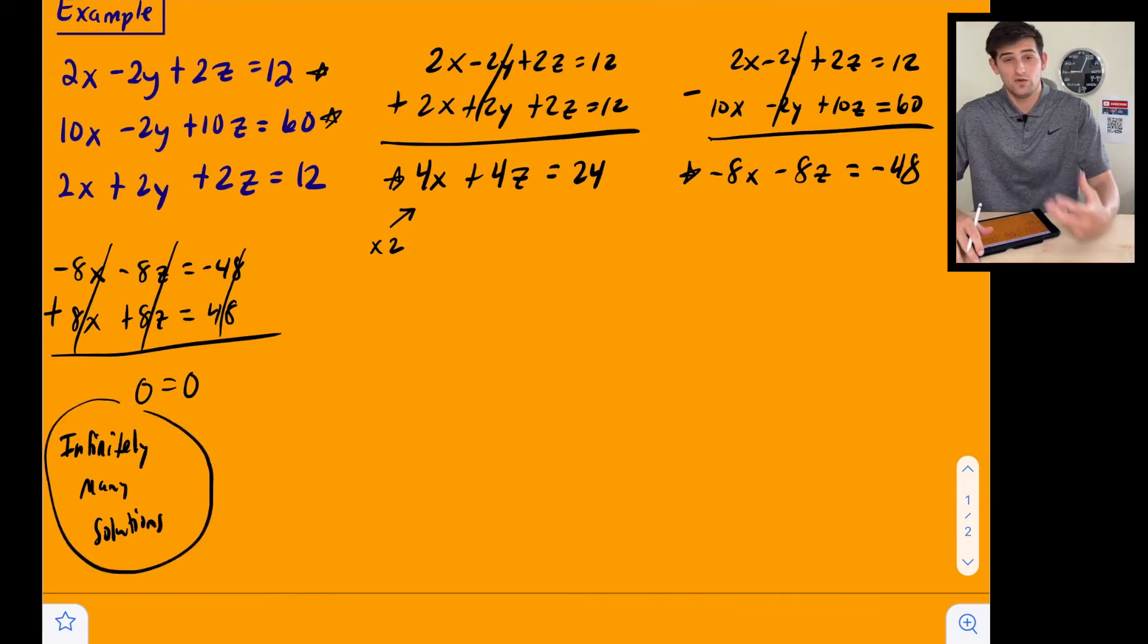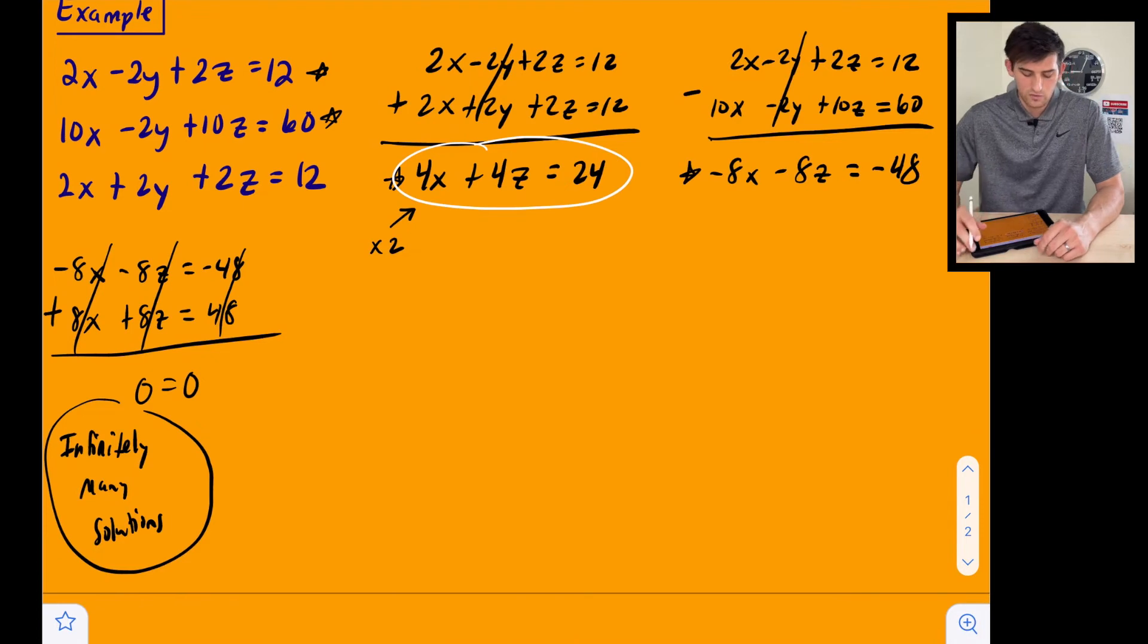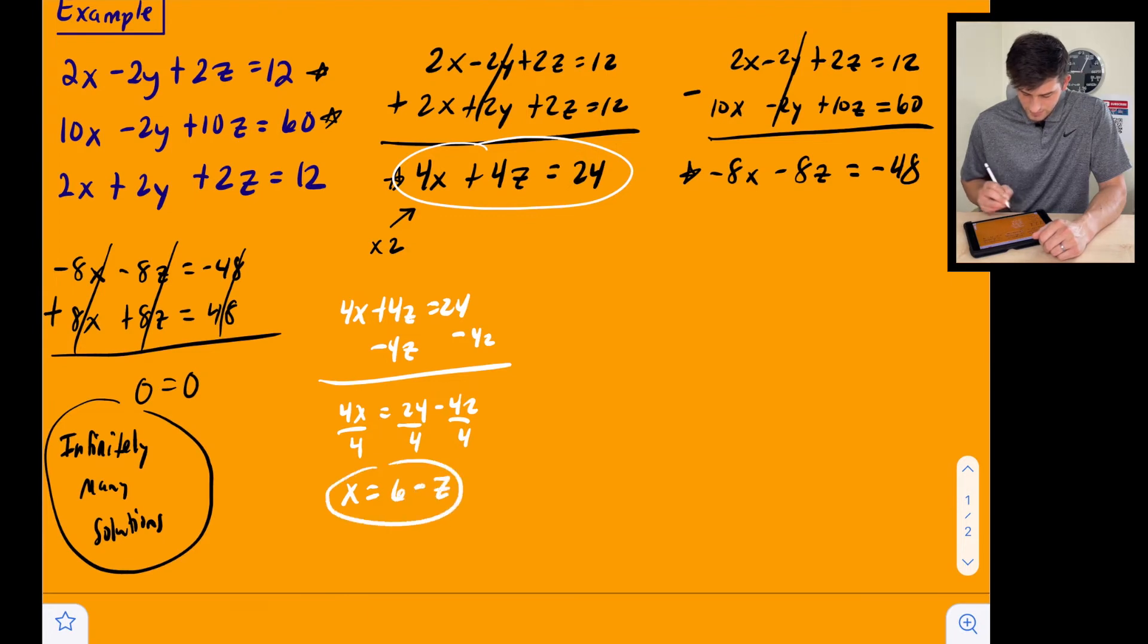But now sometimes we can write a coordinate triple in terms of the variables. So let's go back to an equation that we had and we'll switch up our color. Let's go back to this equation right here. 4x plus 4z equals 24. And let's solve this for x. So let's move this 4z over here minus 4z. So now we have 4x equals 24 minus 4z. And let's divide everything by 4. So this tells me that x is equal to 6 minus z.